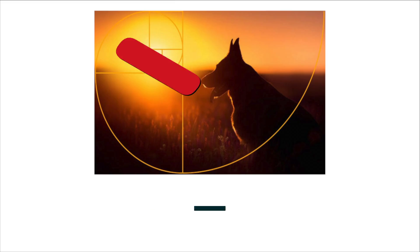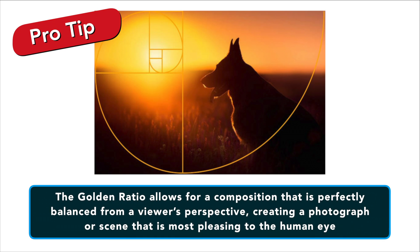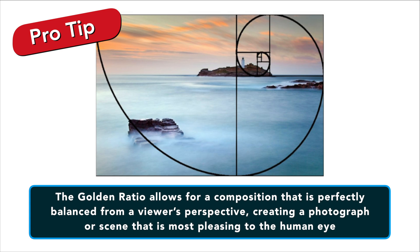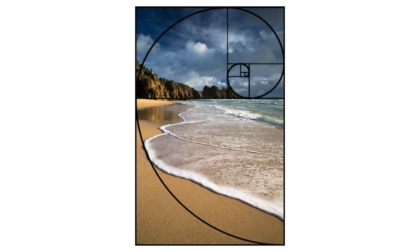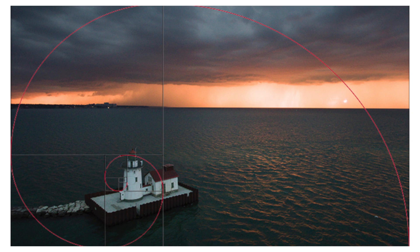Maybe that won't help so much, so let's look at it this way. The Golden Ratio allows for a composition that is perfectly balanced from a viewer's perspective, creating a photograph or a scene that is most pleasing to the human eye. We naturally prefer to look at images or scenes that are balanced and harmonized, and the Golden Ratio provides that.